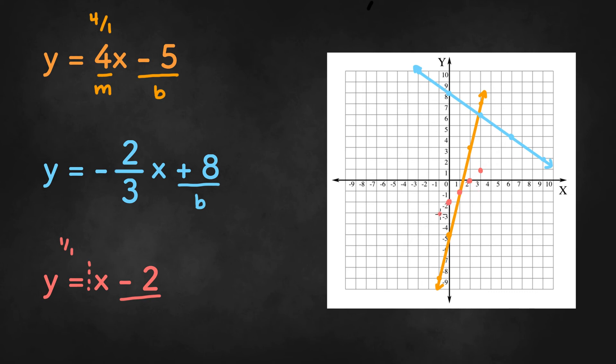Or we can go down 1 and left 1, down 1 and left 1. And once we connect the points, we get a line like this right over here.